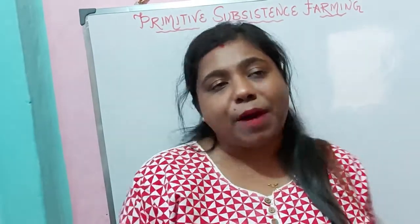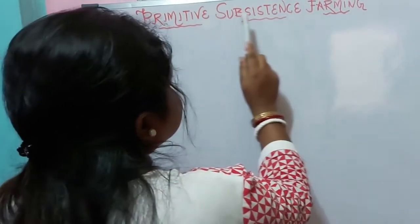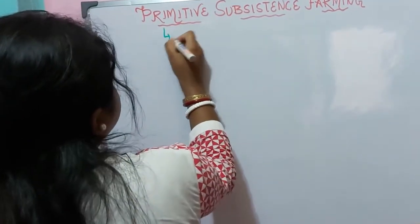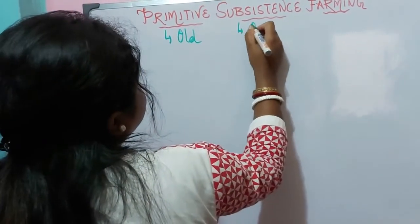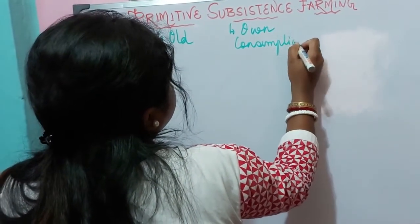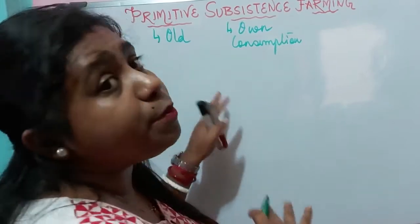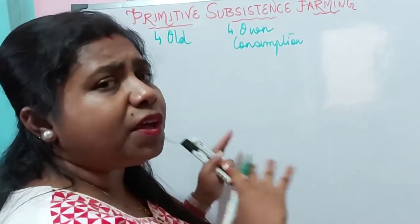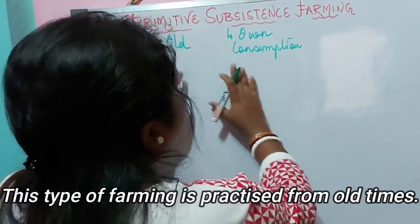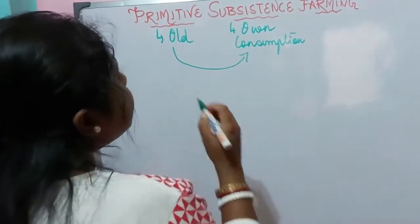Today in this video we will discuss primitive subsistence farming. As you can see the words 'primitive' and 'subsistence' — let us understand the meaning of both words. Primitive means old, and subsistence means own consumption. So primitive subsistence farming is a type of farming practiced from the old days, from the early days, and it is practiced for own consumption. It is an old or primitive method of farming.